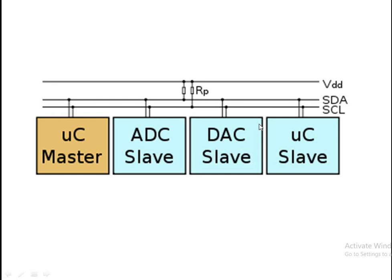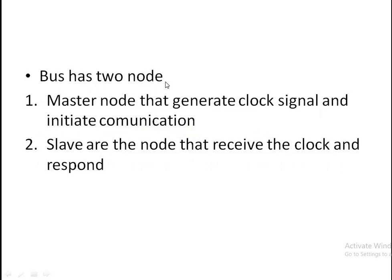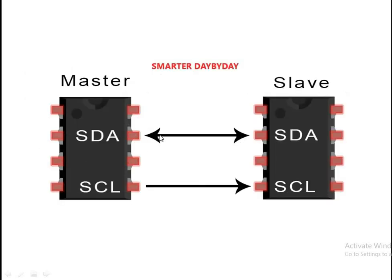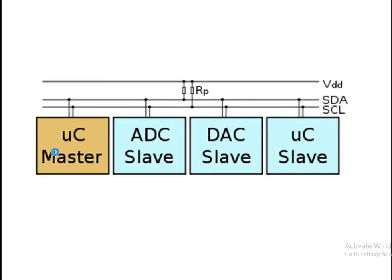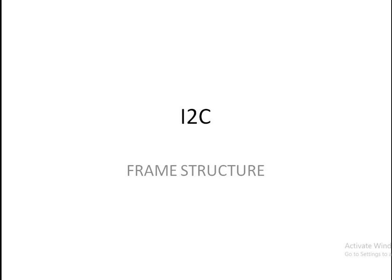The bus has two nodes: master node that generates the clock signal and initiates the communication, and slave node that receives the clock and responds. The network begins with the start bit and ends with the stop bit.